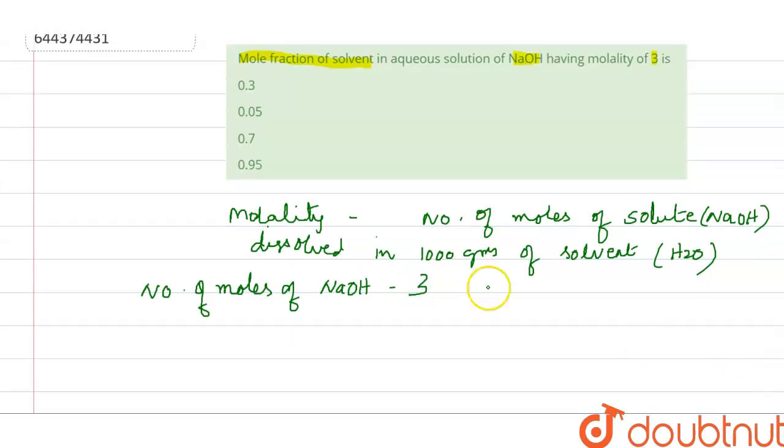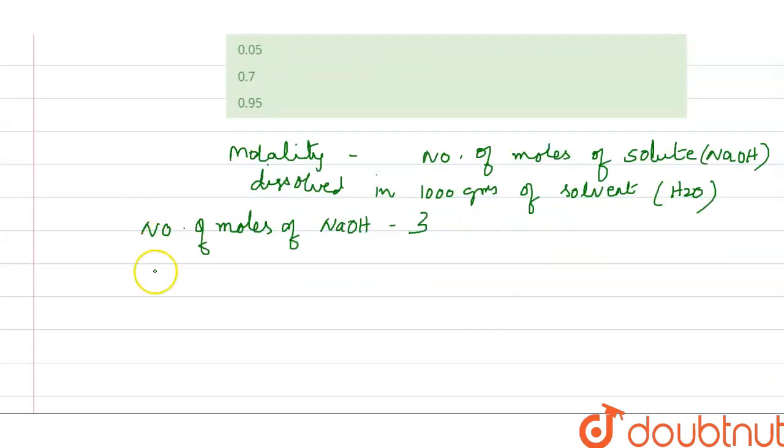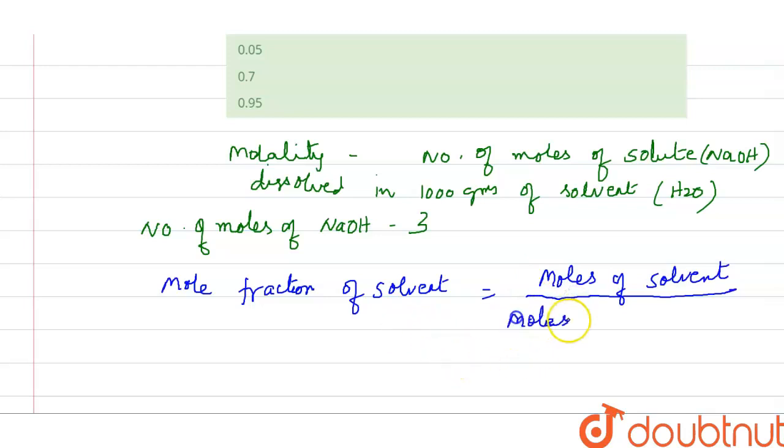Now let us see what is the formula to calculate mole fraction of solvent. Mole fraction of solvent equals moles of solvent divided by moles of solute plus moles of solvent.